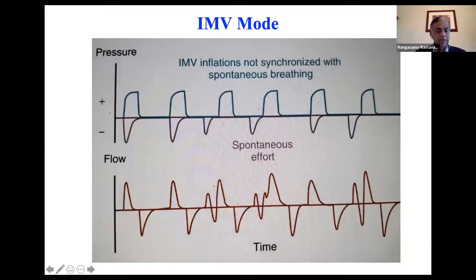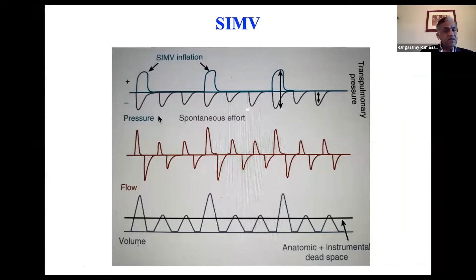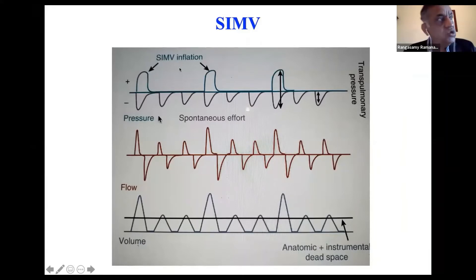If you switch to SIMV mode, every time the ventilator detects the baby is taking a breath, it will give a breath based on the rate you dialed in. So it synchronizes intermittently — between the two breaths. Let's say you set a rate of 30.